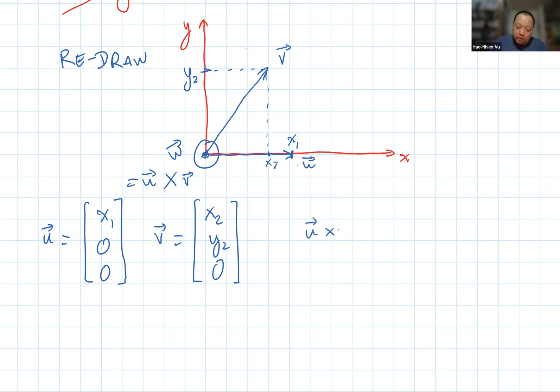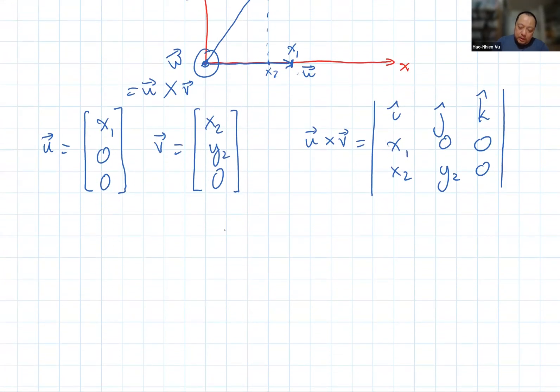Then u cross v will be the determinant i, j, k, x1, 0, 0, x2, y2, 0. I work this out, I get u cross v is equal to, first of all, I need something on the i coordinate. Well, on the i coordinate is this determinant. And that's just 0 minus 0. So the whole thing is 0.